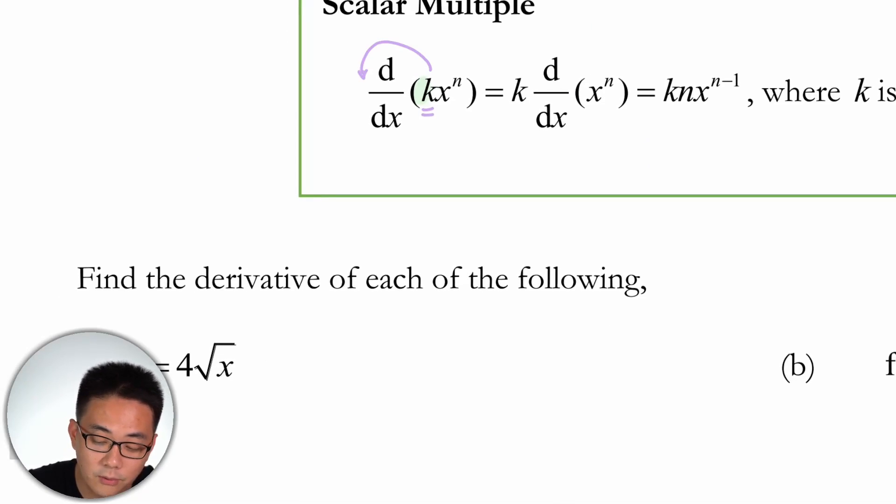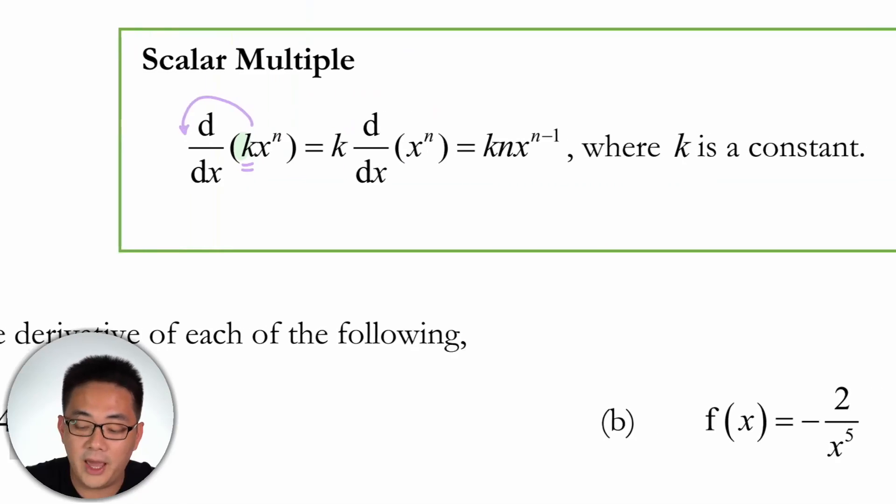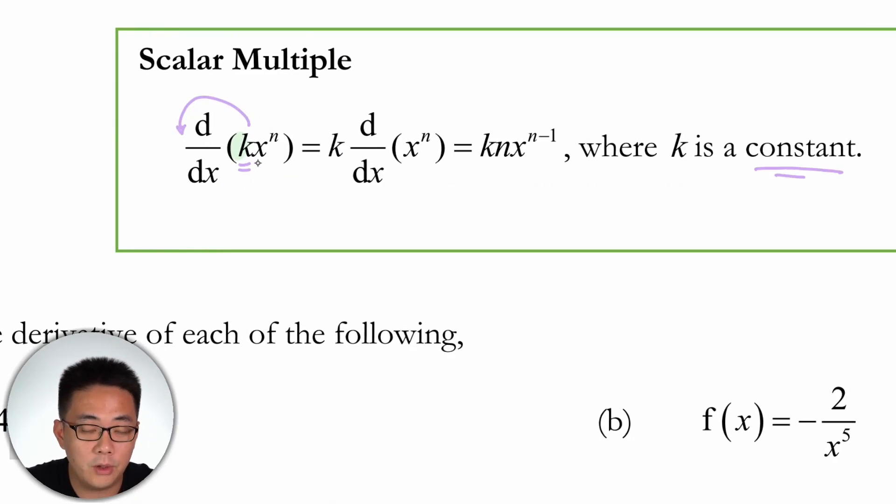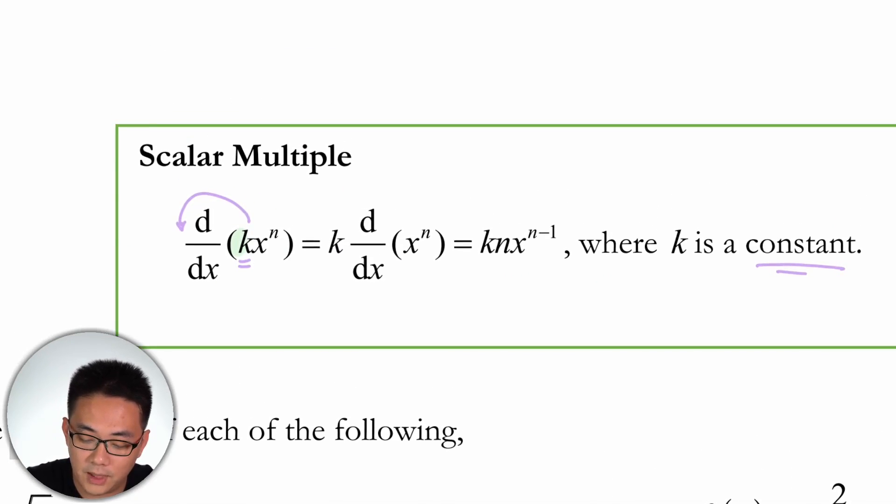So you could just bring the constant out. Now take note, I can't stress this more, it has to be a constant. When you do a derivation, sometimes students think that you could bring out the x, but you can't. So like this case here, this is not equal to dx e^x. Because this is not a constant, you can't bring it out from the dx. And e^x is not a constant obviously, and this we will learn in a later chapter.